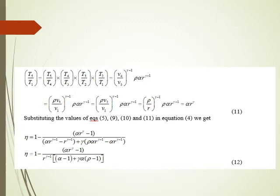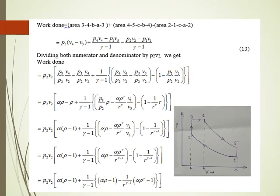Substituting the values from equations 5, 9, 10, and 11 into equation 4, the expression for air standard efficiency of the dual cycle is obtained in terms of r, γ, α, and ρ as shown in equation 12.